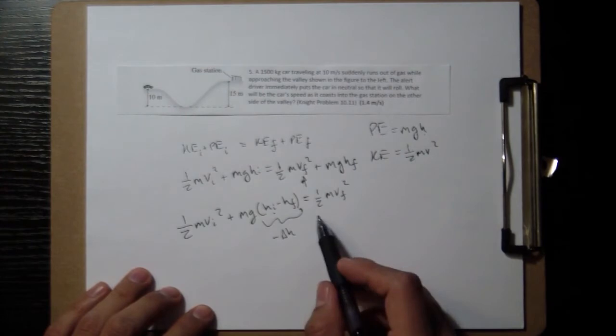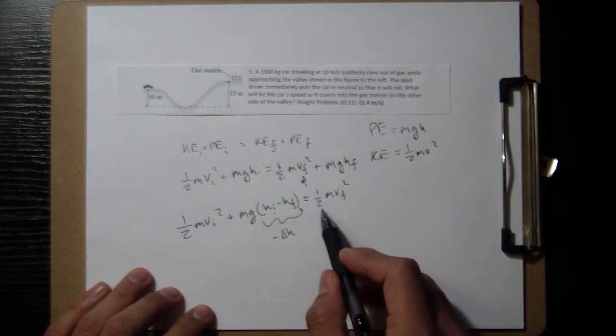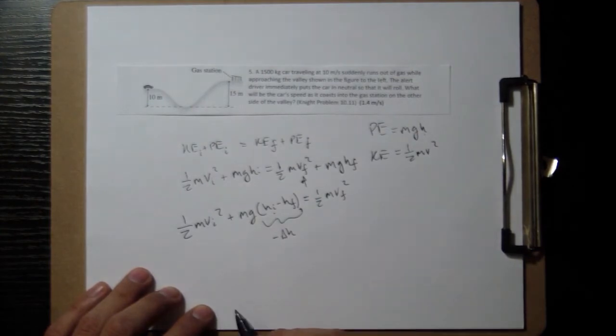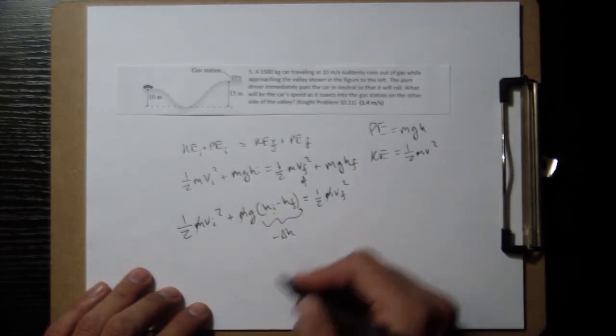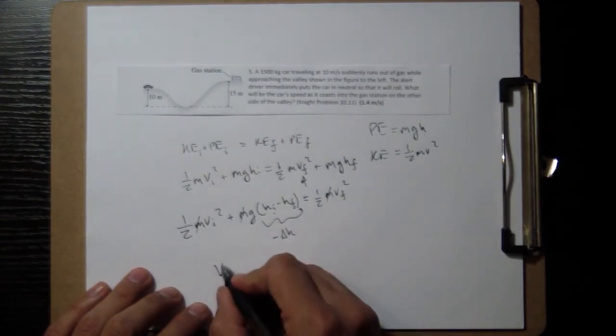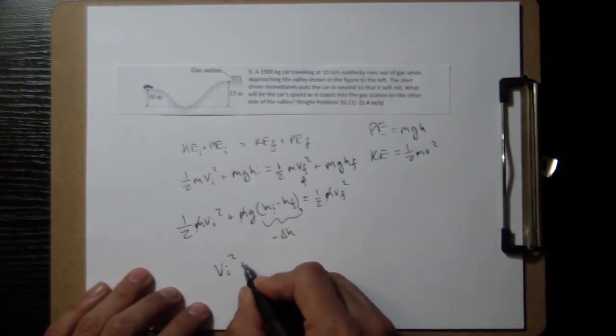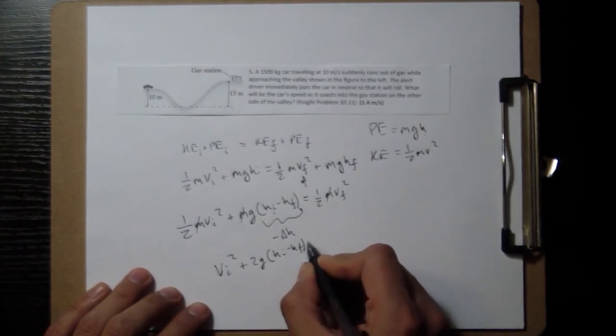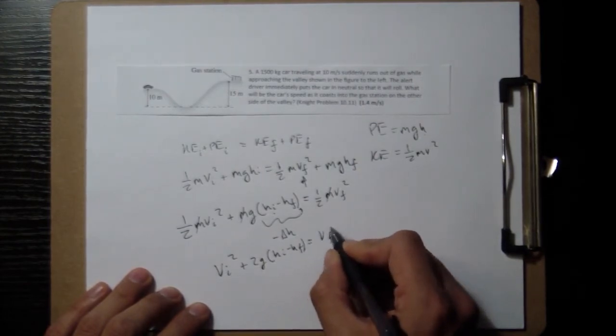And actually, one more thing is that I'm trying to get rid of this half and the m, I'm going to multiply everything by 2 and divide everything by m. The m's cancel out. Multiplying everything by 2, I get v i squared plus 2 g h i minus h f is equal to v f squared.